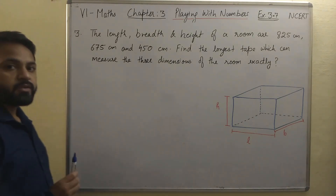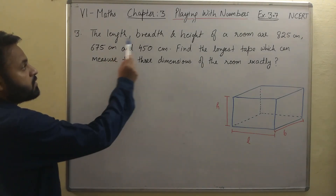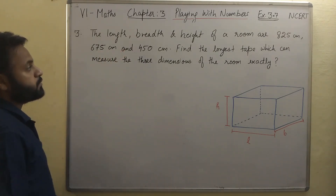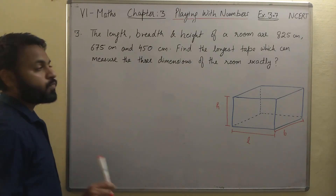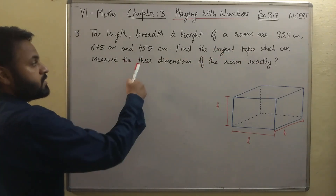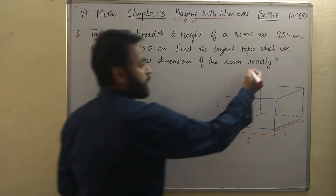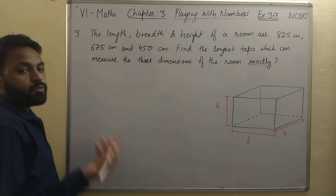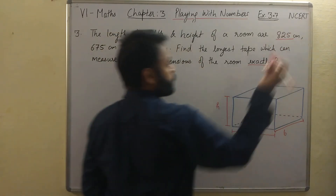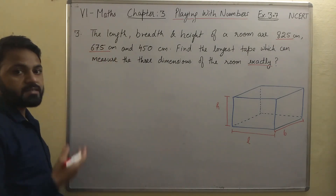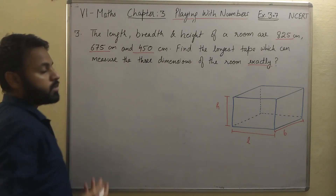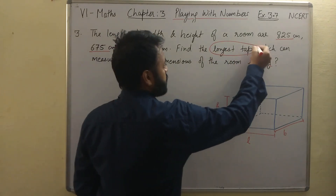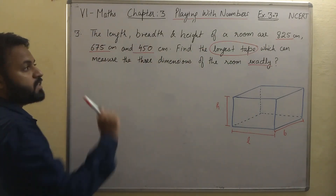In question number 3, it is asked: the length, breadth, and height of a room are 825 cm, 675 cm, and 450 cm. We have to find the longest tape which can measure these 3 dimensions of the room exactly. Please mind this word 'exactly.' Length is 825 cm, breadth is 675 cm, and height is 450 cm.